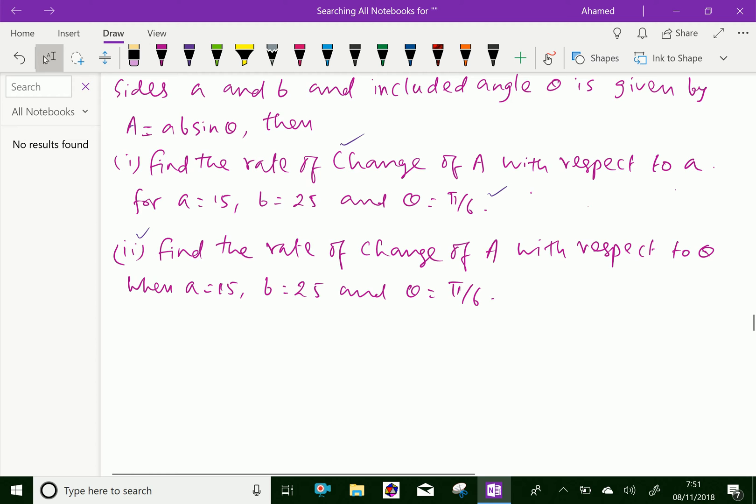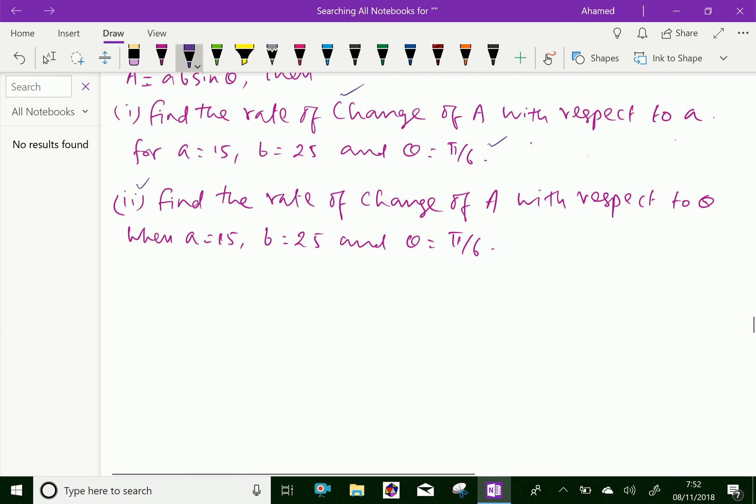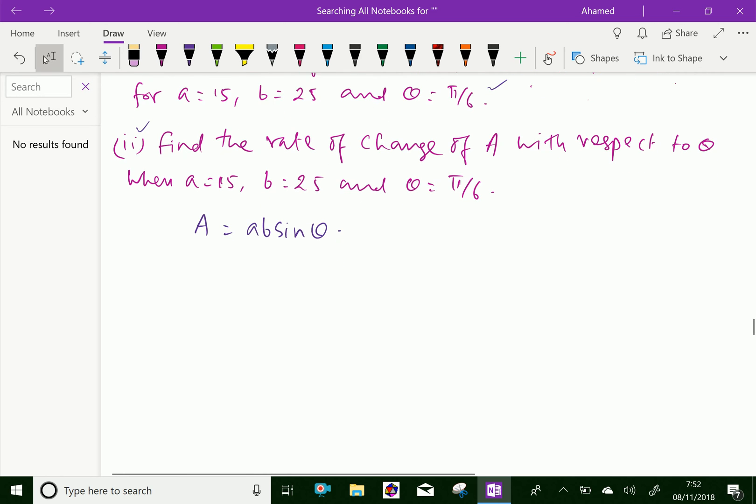Now, the given function is A = ab sin θ, which is the formula for the area of a parallelogram with adjacent sides a and b and included angle θ.